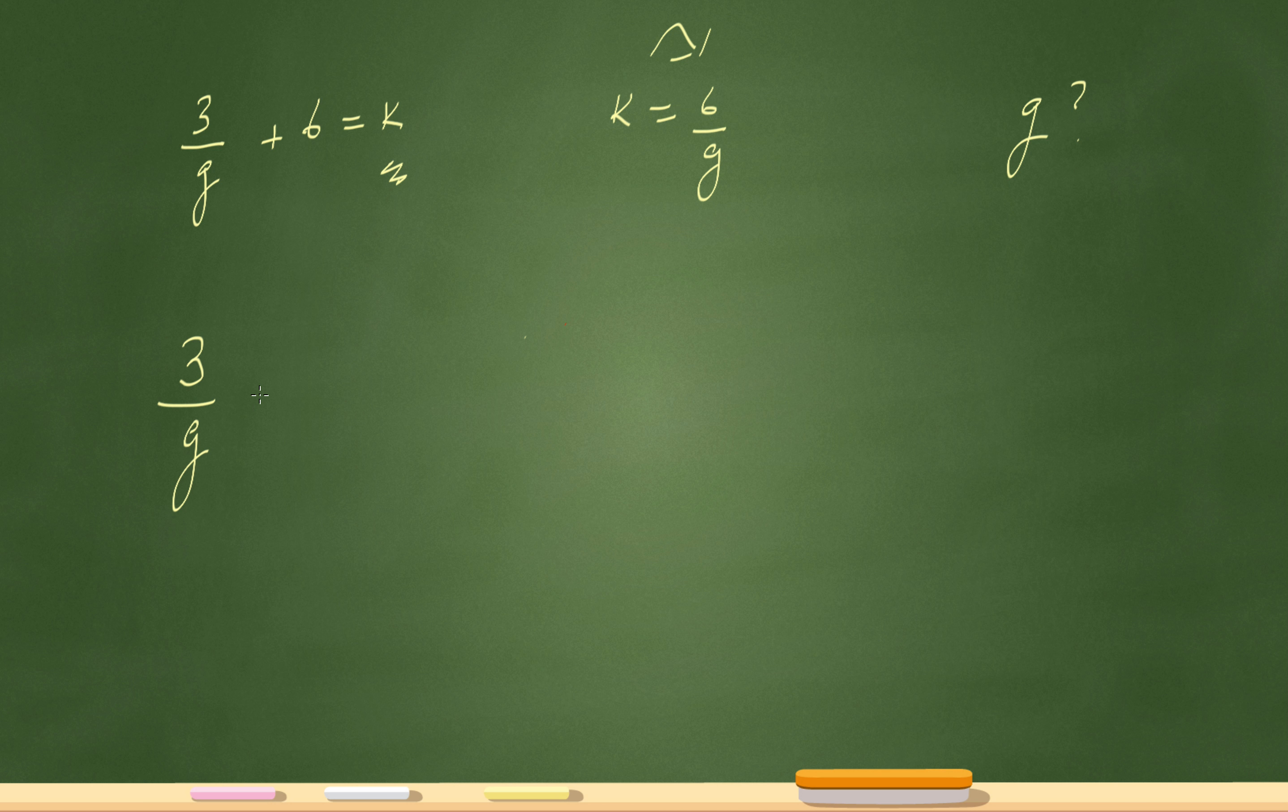So let's get to 3 over g plus 6 equals 6 over g. All I've done is replace that k with 6 over g. Now I just have one variable g on this side and I should be able to solve for it.